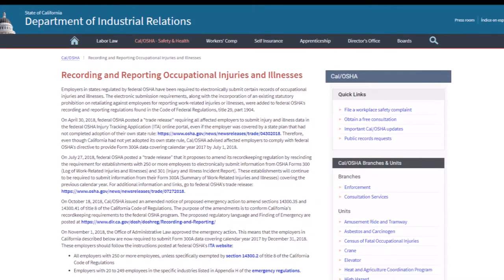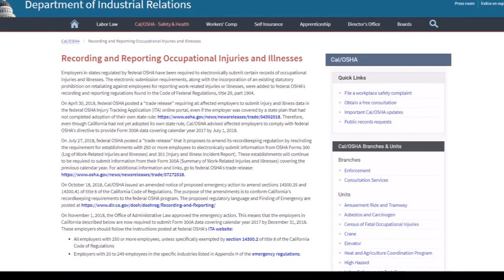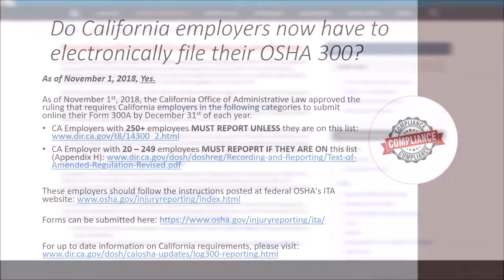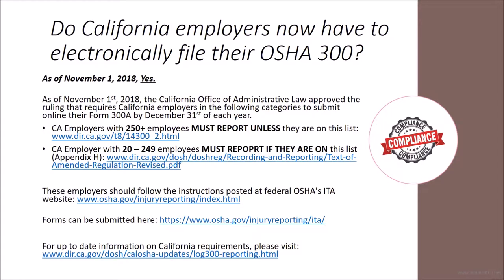For up-to-date information on California requirements, you can visit the Department of Industrial Relations website found at the bottom of this slide. The ruling states that all California employers with 250 or more employees must submit their Form 300A online by December 31st, unless specifically exempted by Section 14300.2 of Title VIII of the California Code of Regulations. California employers with 20 to 249 employees that fall under the specific industries listed in Appendix H of the Emergency Regulations must also submit their Form 300A online.